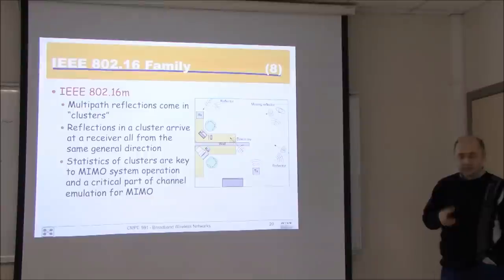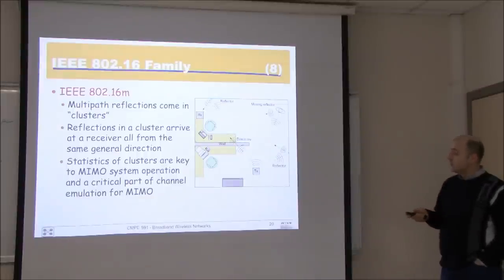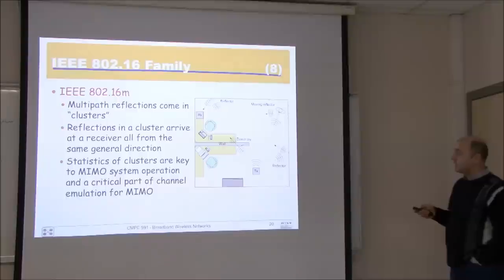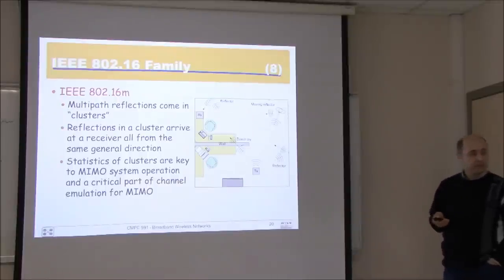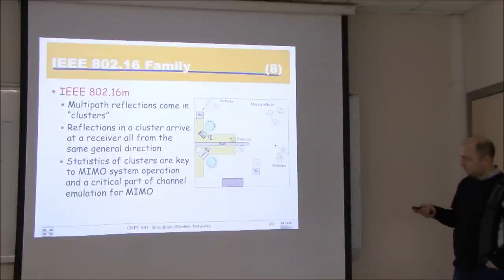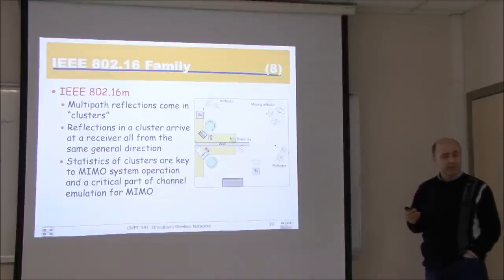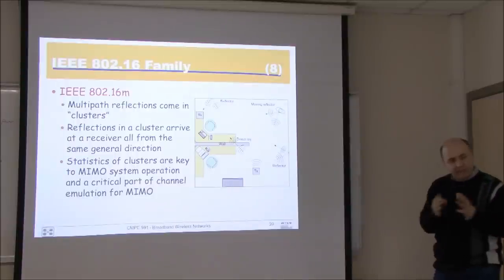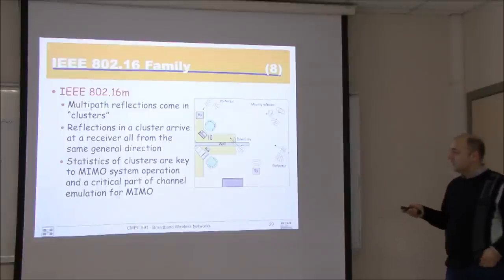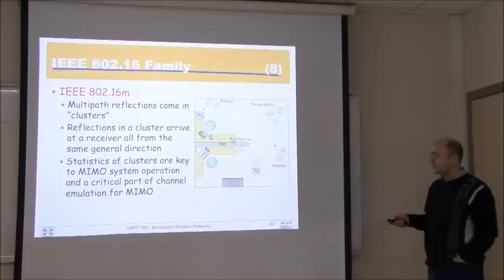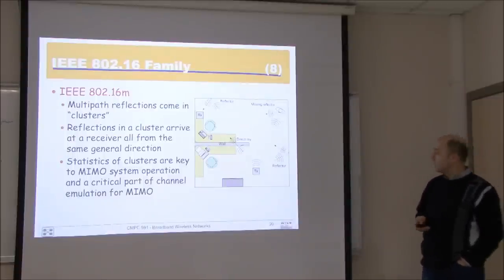In radio communications, multipath is a problem, and multipath reflections typically come in clusters. There are many reflections from many objects in the environment. Reflections in a cluster arrive at the receiver all from the same general direction — so many reflections but clustered, which is a good thing. The statistics of clusters are key to MIMO operation and the critical part of the channel emulation for MIMO.